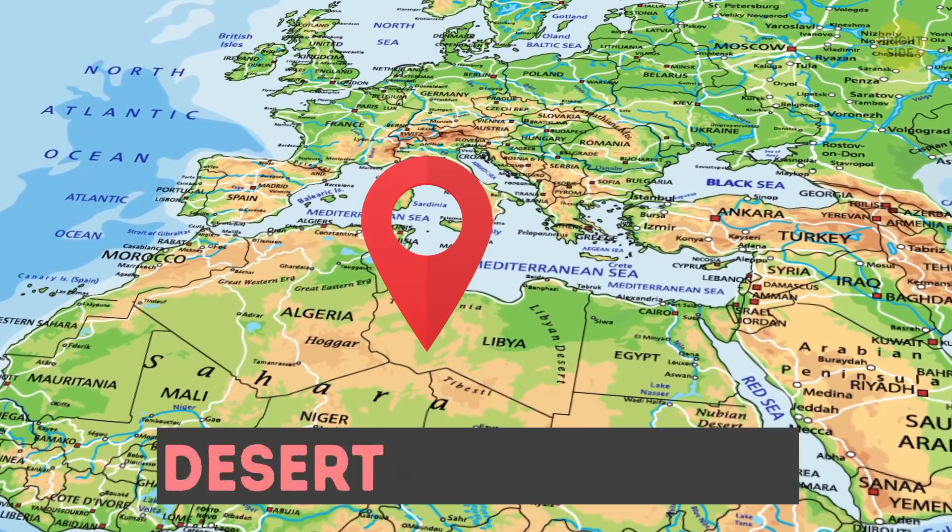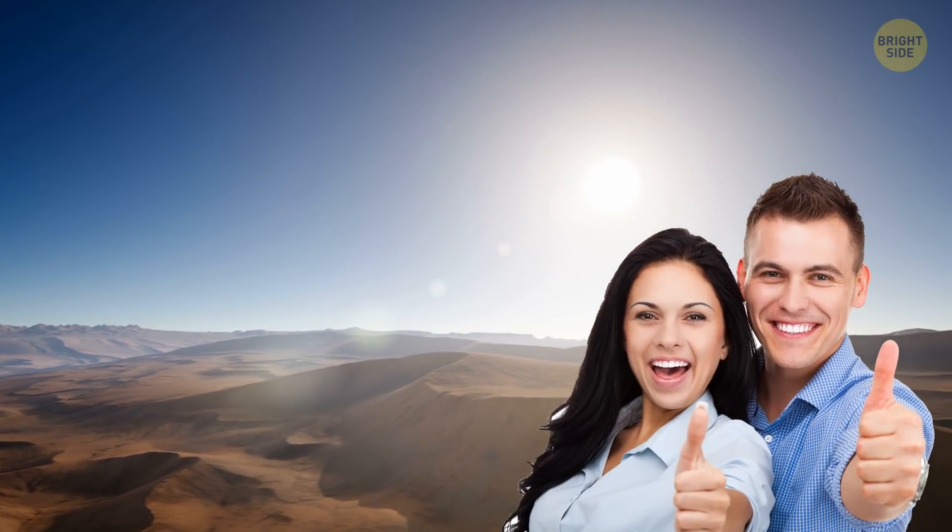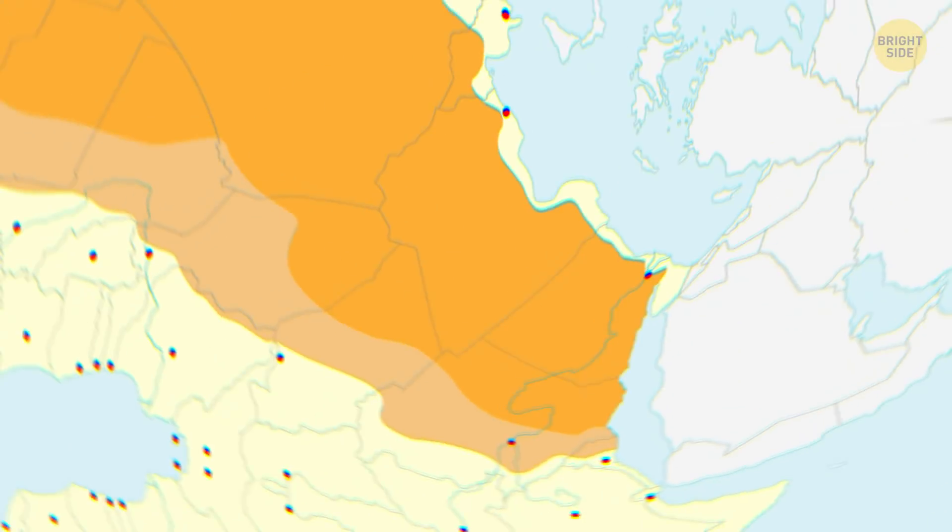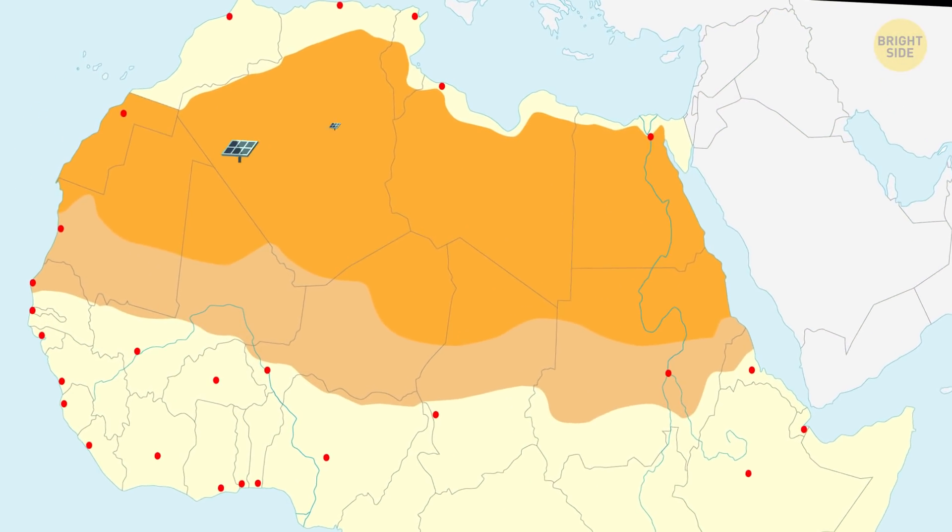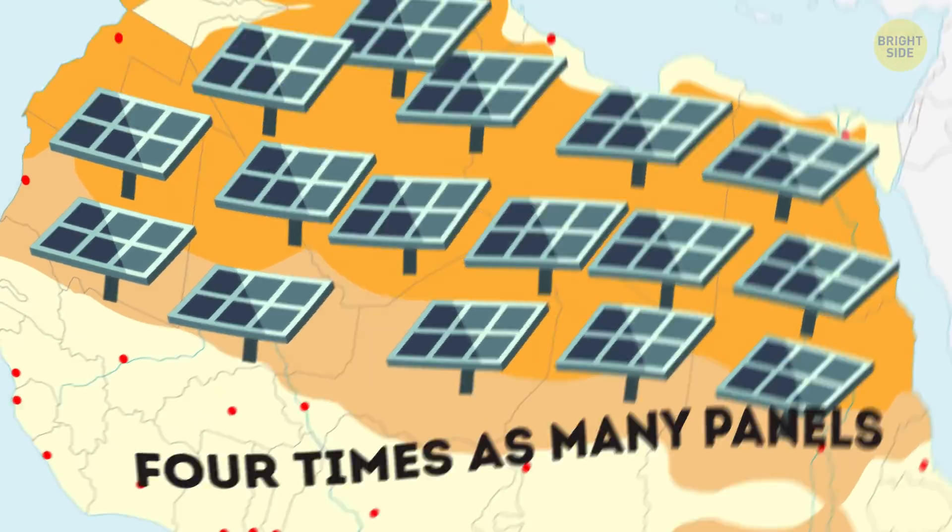Right, the Sahara Desert! The largest hot desert in the world seems like the perfect place to install as many solar panels as humankind could need. By the latest estimates, in fact, it could accommodate more than four times as many panels as we actually need to meet our current demands.